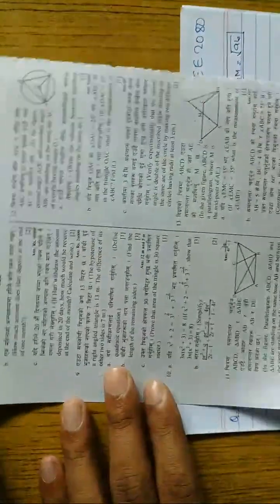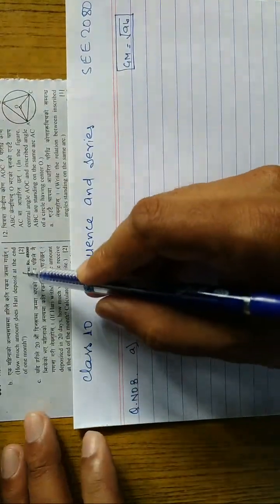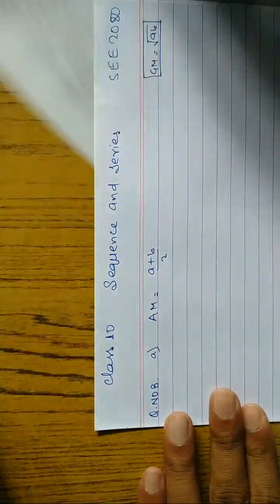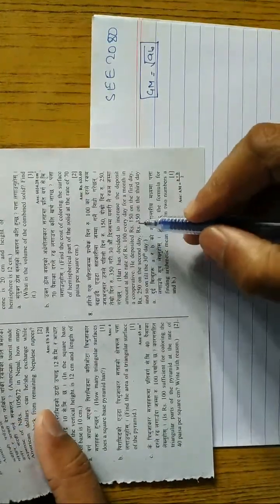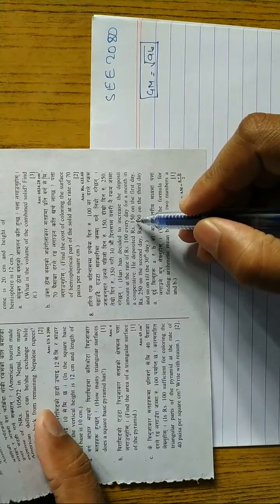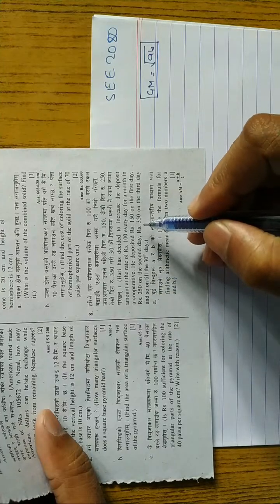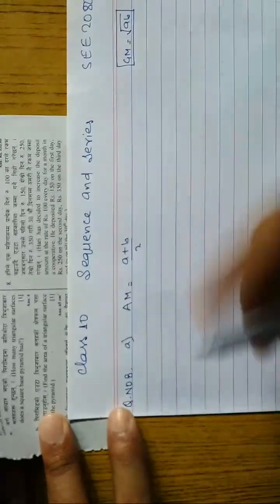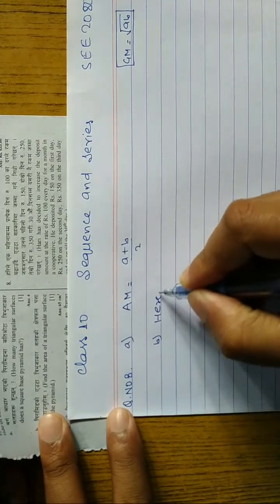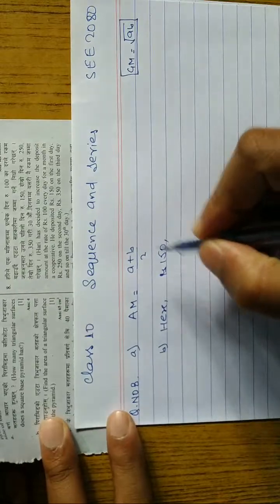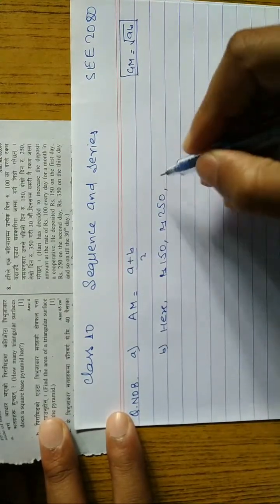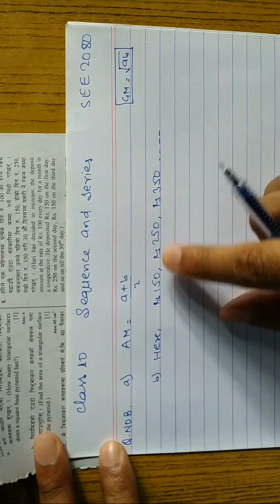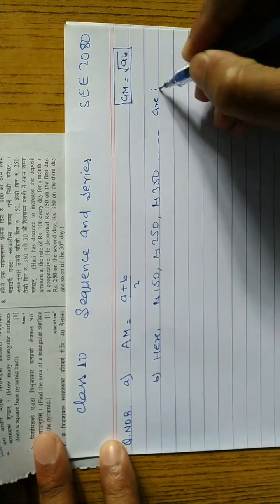Question part B: how much amount does Hari deposit at the end of one month? The deposits are 150 rupees, 250 rupees, 350 rupees, and so on — a difference of 100 each day. This is an arithmetic progression with a common difference of 100.